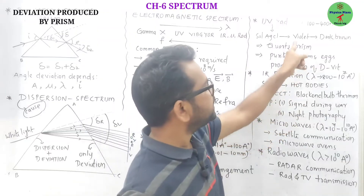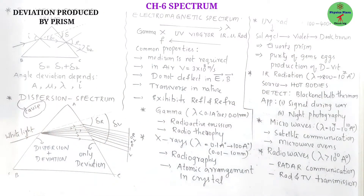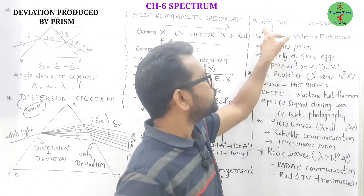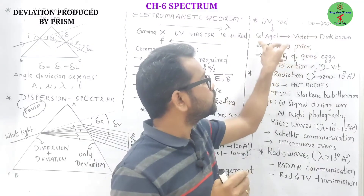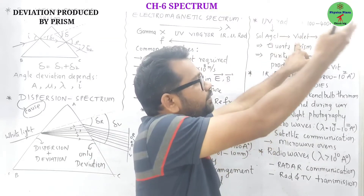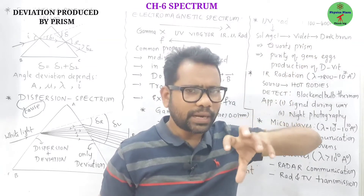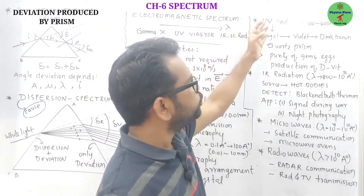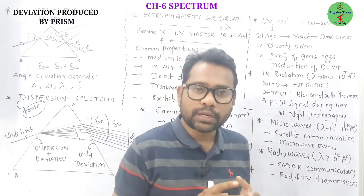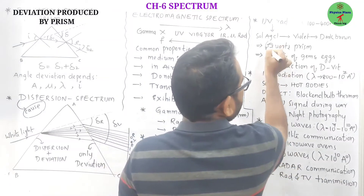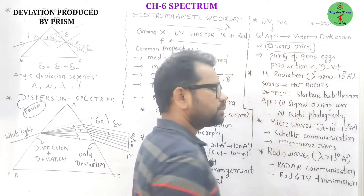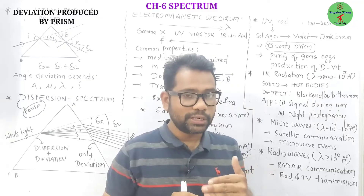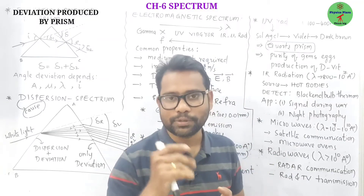Next is UV radiation. The wavelength range is 100 to 400 angstroms. When a solution of silver chloride is exposed to UV radiation, it will first turn violet and then finally dark brown — this is how they are recognized and detected. How can we obtain the UV spectrum? By using a quartz prism. Why not a glass prism? Because glass absorbs all UV radiations, whereas quartz absorbs all radiations except UV, so that the UV spectrum is obtained.